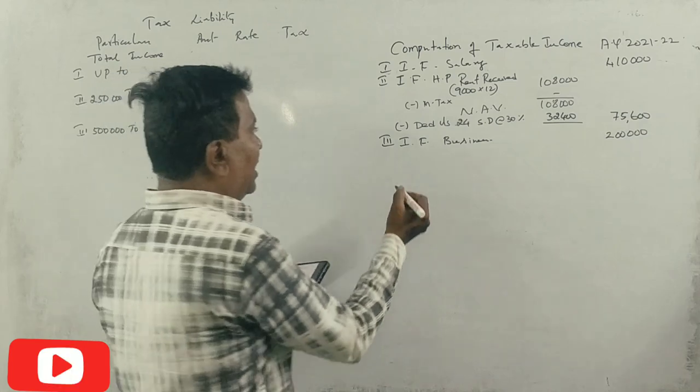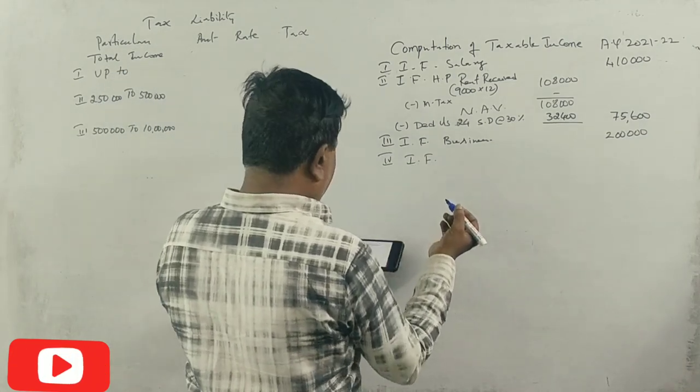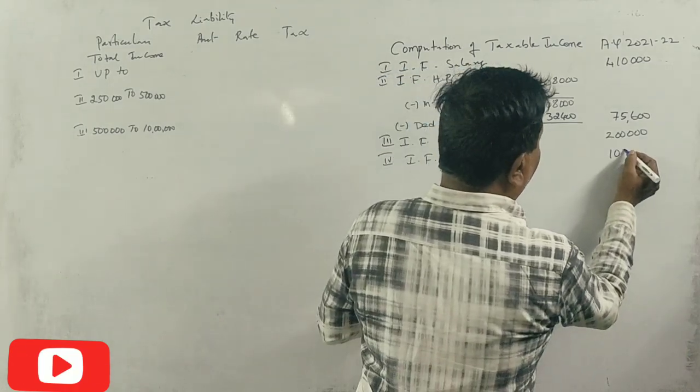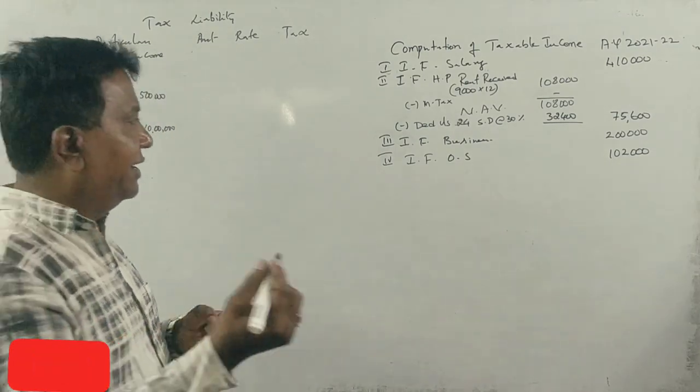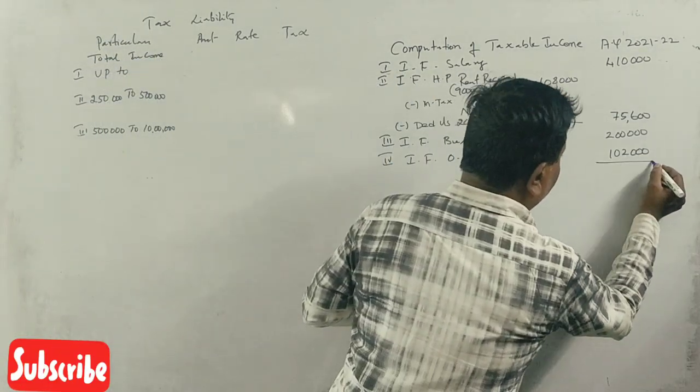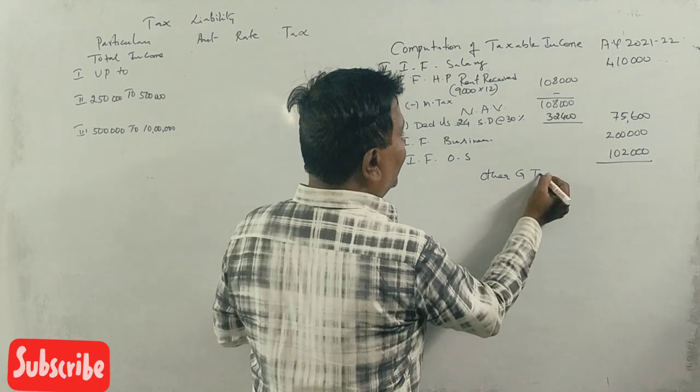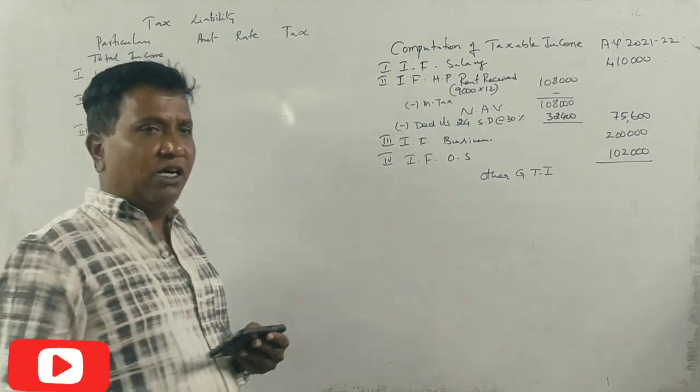Income from business is 2,00,000. Next, income from other sources, 1,02,000. Correct.